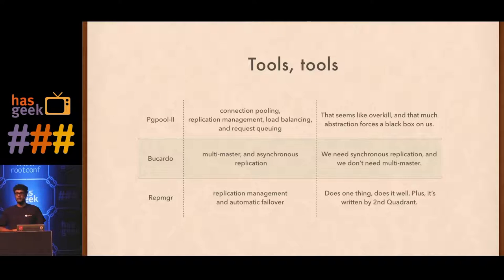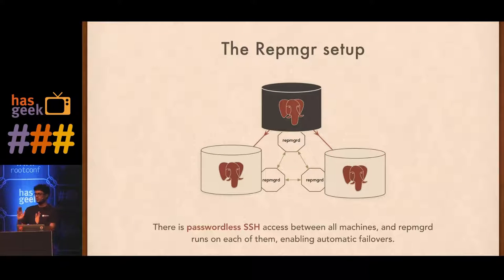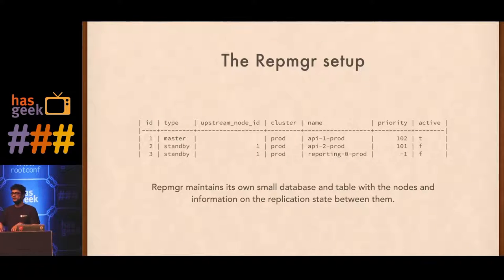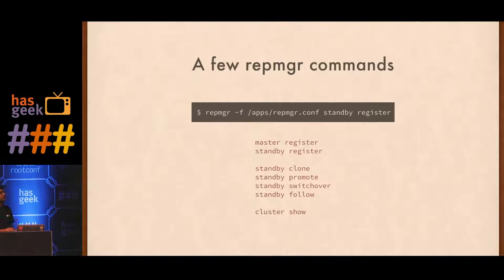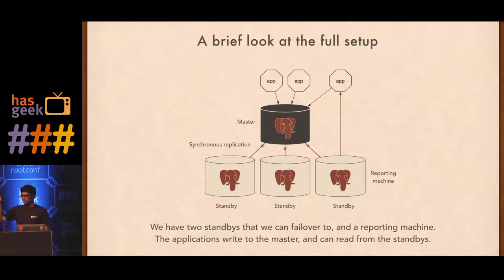We looked at RepManager and were able to make it work. Our cluster had RepManager daemons running on each machine with passwordless SSH access between them. We have a master DB with synchronous replication to the standbys. RepManager maintains its own table with a list of nodes, their priorities, and current statuses. It has commands to clone a standby, promote a standby to master, or do a switchover. Our application is load balanced and talks to one database, and the reporting service talks to one of the standbys — the reporting DB.